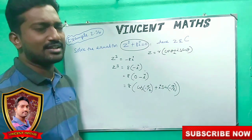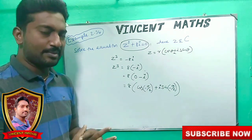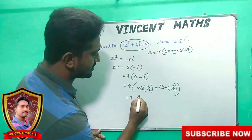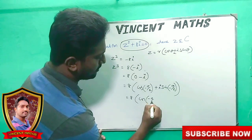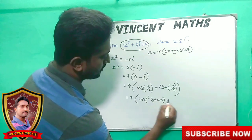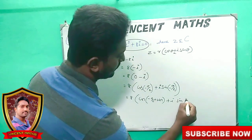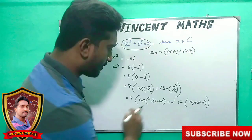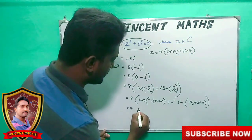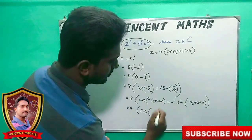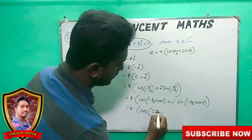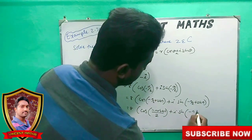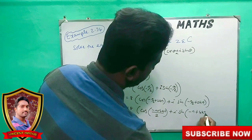Now in polar form, we add 2kπ. So we write: 8 into [cos(−π/2 + 2kπ) + i sin(−π/2 + 2kπ)]. Add 2kπ.